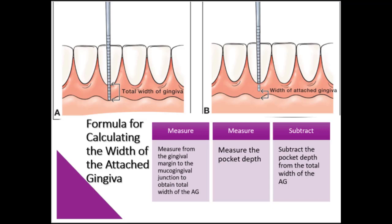The attached gingiva lies between the free gingiva and the alveolar mucosa, extending from the base of the sulcus to the mucogingival junction. The width is not measured on the palate since it's impossible to determine where the attached gingiva ends and the palatal mucosa begins. The attached gingiva keeps the free gingiva from being pulled away from the tooth. Make sure that you are familiar with how to calculate the width of the attached gingiva.